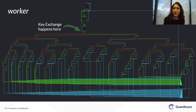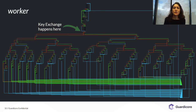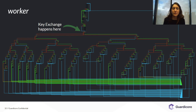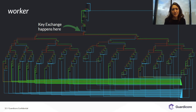The malware decrypts this input and then compares it to several different strings. Each branch in this function corresponds to a command that the malware supports and dispatches further to another function. So I zoomed in on each branch and constructed a set of commands that the malware supports.